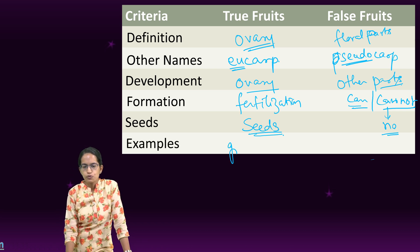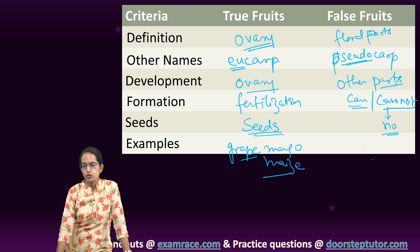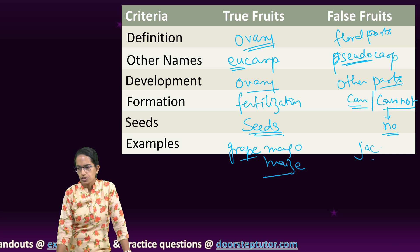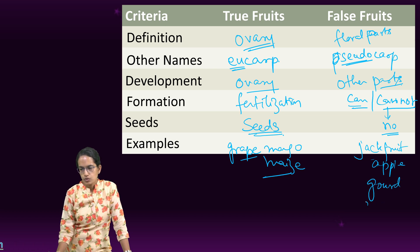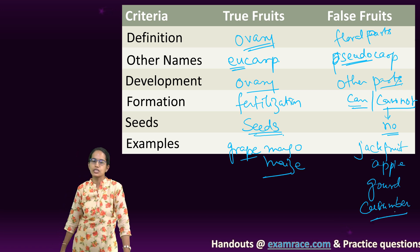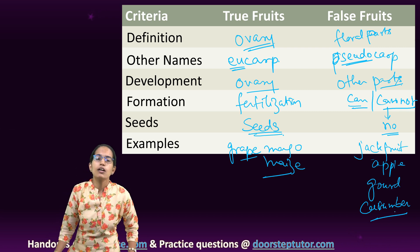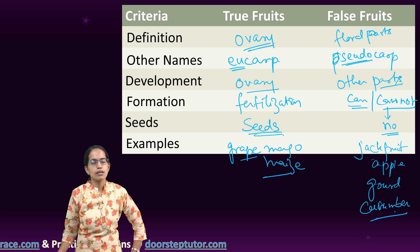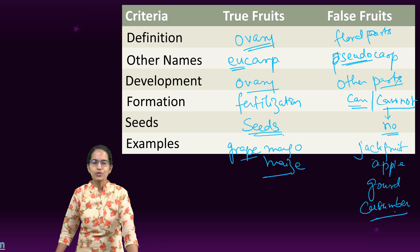Good examples of true fruits are grape, mango, and maize. Coming on to examples of false fruits: jackfruit, apple, gourd, and cucumber are some good examples. In this lecture, we have understood what is true fruit, false fruit, and parthenocarpic fruit — the differences between them and the examples for the same. Very important concept, extremely important for your examination. Thanks for joining in.